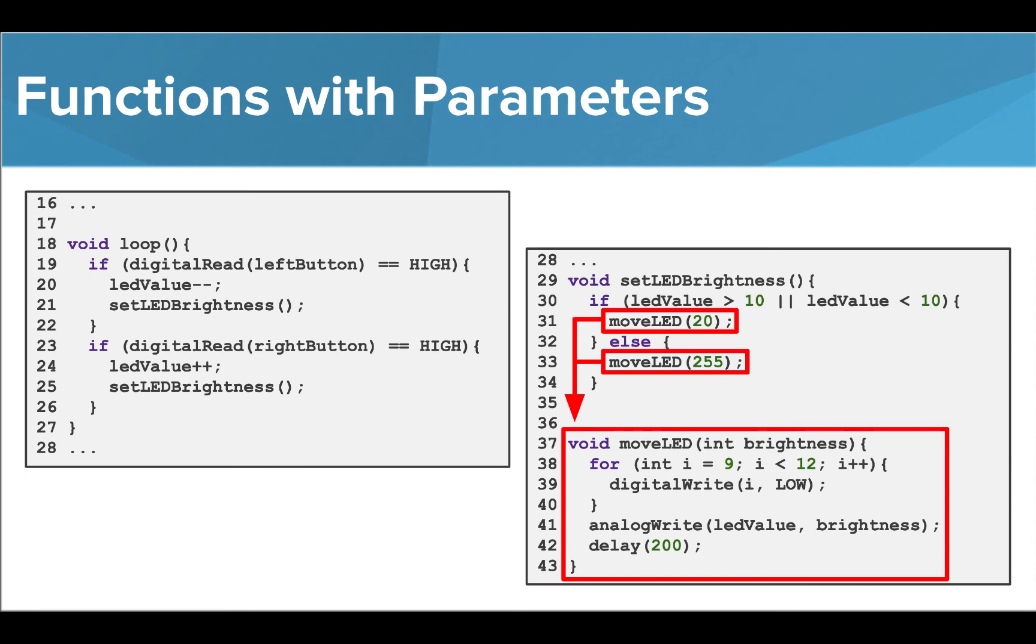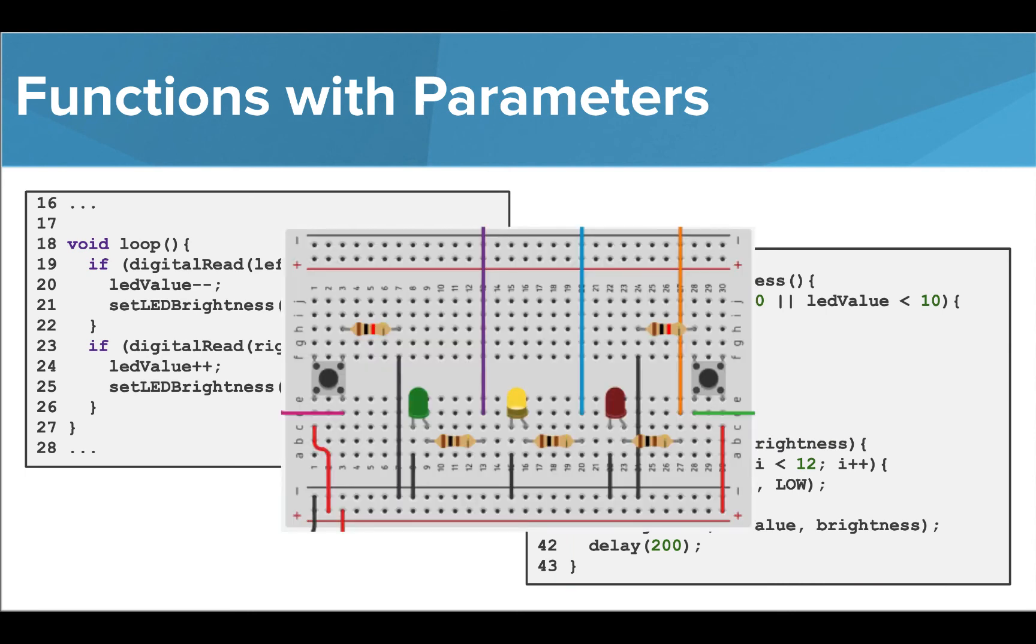We can call functions inside other functions. So when this program runs, the output is an LED that is moving based on button clicks and changing brightness depending on the location.